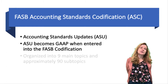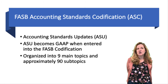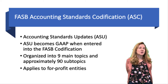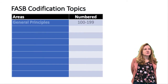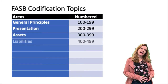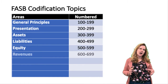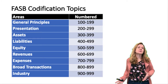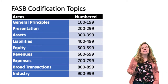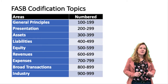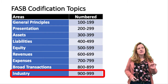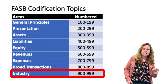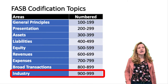The codification is organized into nine main topics and approximately 90 subtopics, and it applies to for-profit entities. The codification starts with areas — general areas that you need to be able to identify. So if you're looking for a specific topic, you need to know what area it would be in. For example, if you're looking for accounts receivable, you have to know that that is an asset. Everything is numbered, and the very bottom level is industry-specific. So if it's a 900 number, that is an industry-specific topic, which I'll show you in a future slide.